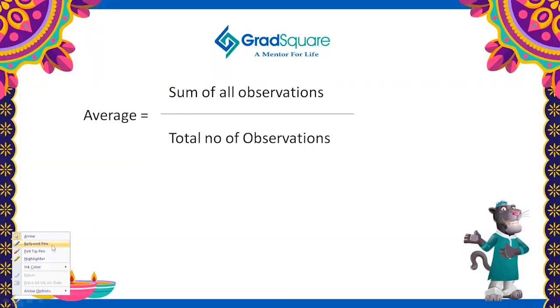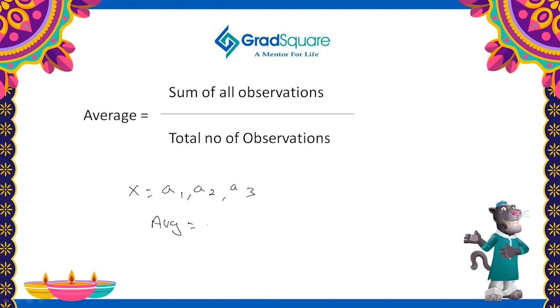So let us take a data set X equal to a1, a2, a3. The average is nothing but a1 plus a2 plus a3 divided by 3.